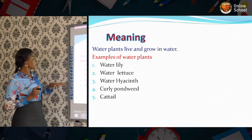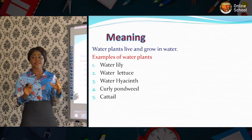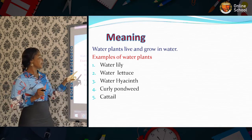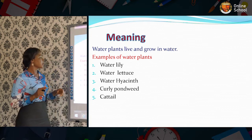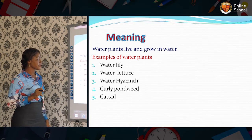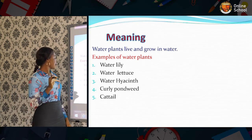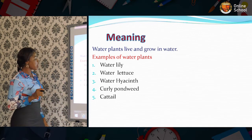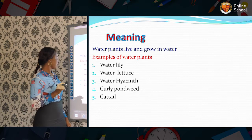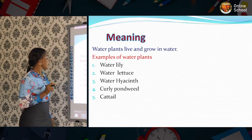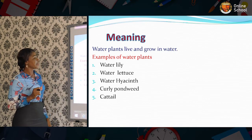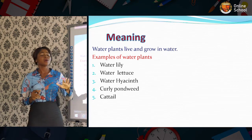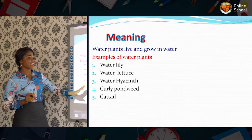Don't forget. We'll be looking at examples of water plants. Here I have: one, water lily; two, water lettuce; three, water hyacinth; four, coontail pondweed; five, coontail pondweed. The last one I have is cattail. I told you we have a lot of water plants, but for this lesson we'll only be looking at these five.